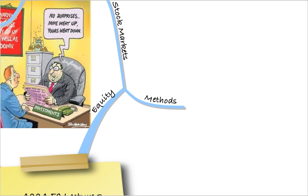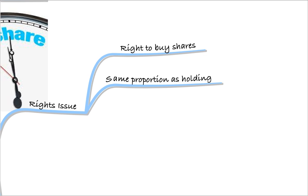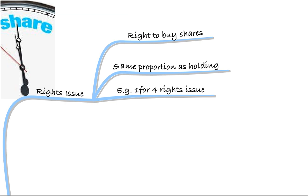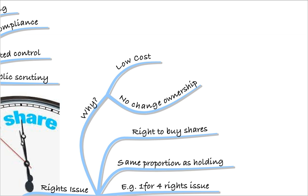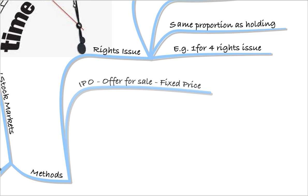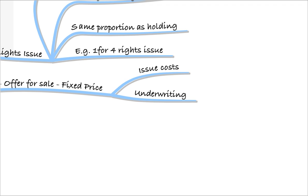We talked about methods to raise equity. First, a rights issue — the right to buy shares in the same proportion as your current holding. For example, a one-for-four rights issue means that for every four shares you own, you can buy one in the new rights issue. The company might use a rights issue because it's a low-cost method and there's no change in the ownership of the business. We also talked about an IPO — an initial public offering or offer for sale at a fixed price — but it's very costly, with underwriting costs making it very expensive.